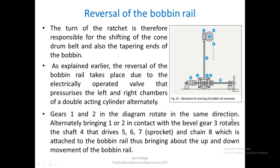By doing so it brings either plate bevel 1 or 2 into position and into contact with bevel 3. Gears 1 and 2 rotate in the same direction — say clockwise throughout the build of the bobbin. By alternately bringing 1 and 2 in contact with bevel gear 3, it rotates shaft 4, which further drives gears 5, 6, 7, and then chain 8 attached to the bobbin rail, bringing about the up and down movement. This is how reversal of the bobbin rail takes place on a slightly modern roving frame.